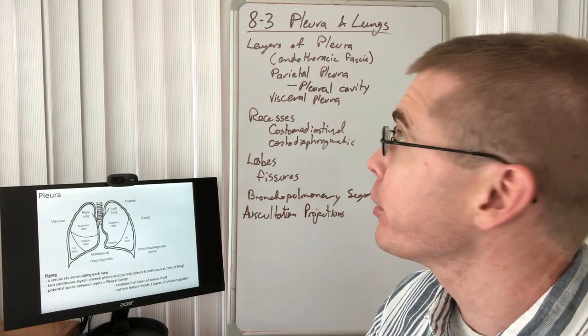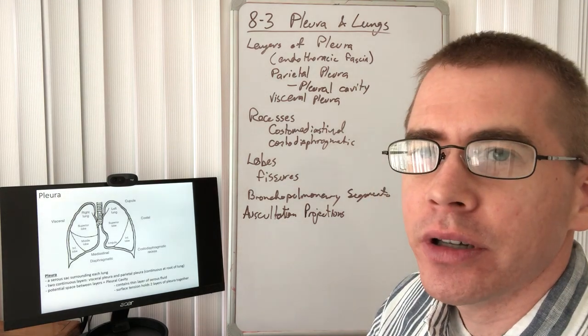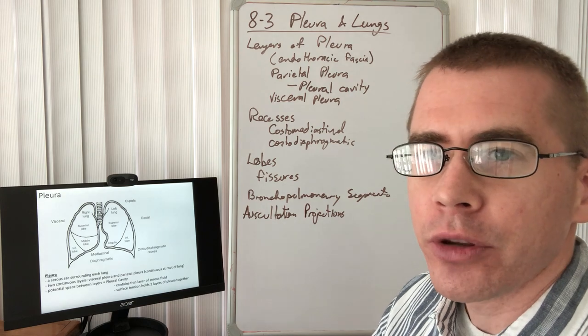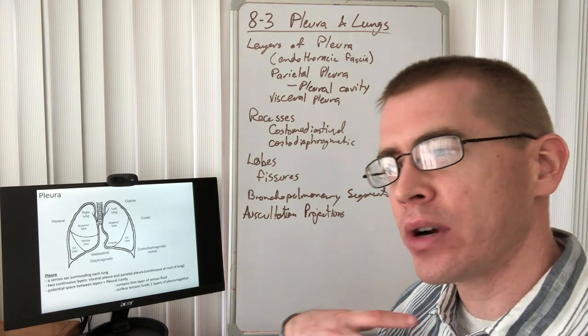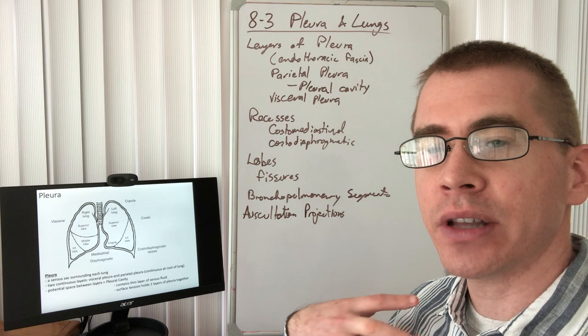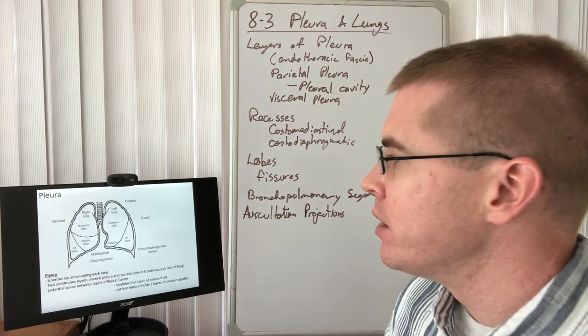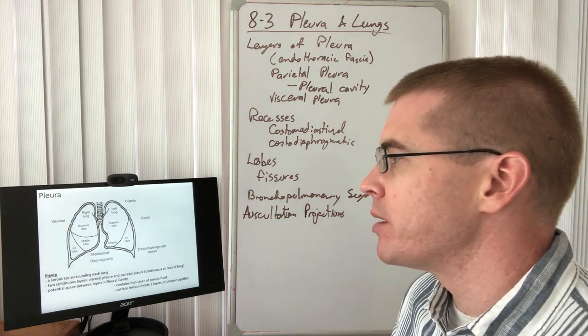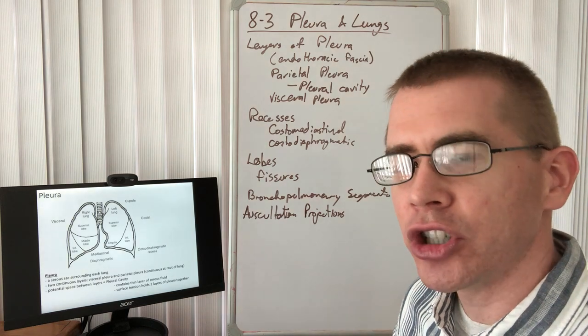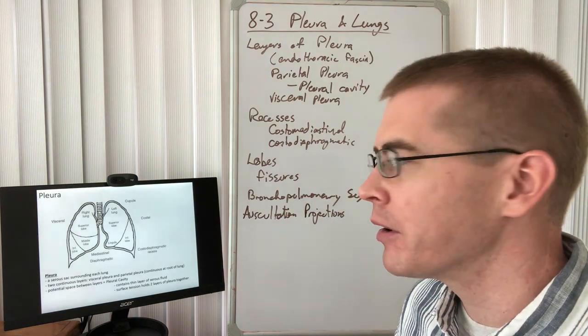Welcome to lecture 8-3. This is the lecture on the pleura. The pleura are the cavities in the thorax on either side of the mediastinum, so they contain the lungs. Of course, the pleura is going to be composed of a number of different connective tissue layers, just like the mediastinum and its pericardium.